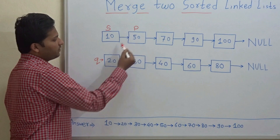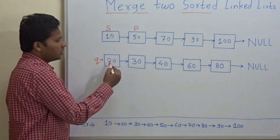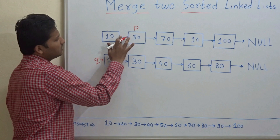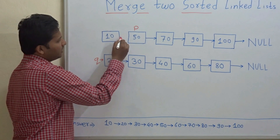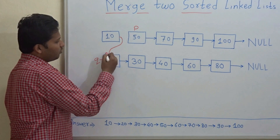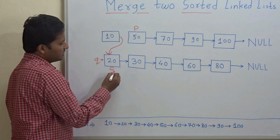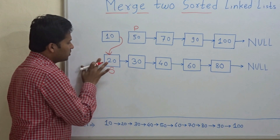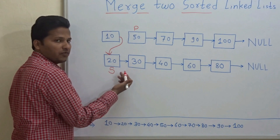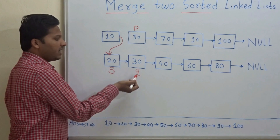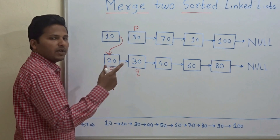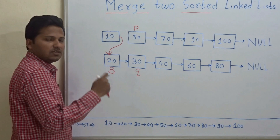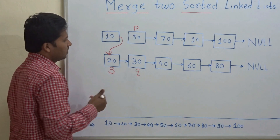P is 50 and Q is 20. What is less? 20 is lesser. So now S will point to 20 — this link will be deleted and this link will point to 20, which is why S is pointing to 20 now. Now as per the rule, the pointer Q will point to the next node of S always. The pointers P and Q, after one comparison, whenever a link is created, P and Q are set to the next node of S respectively.